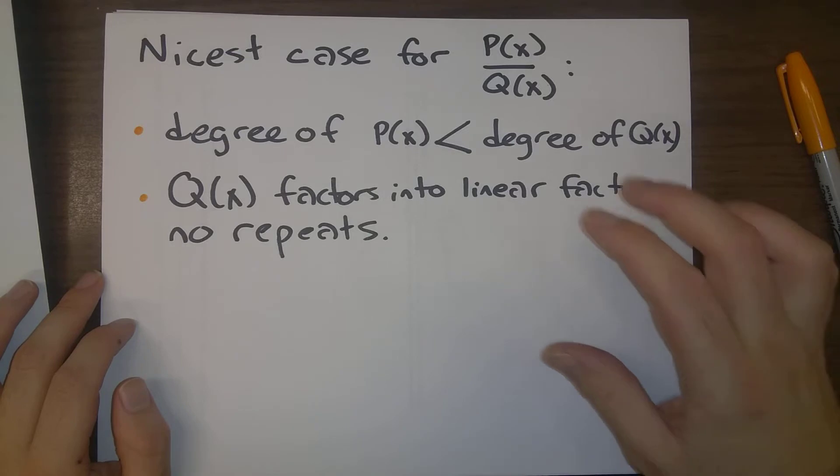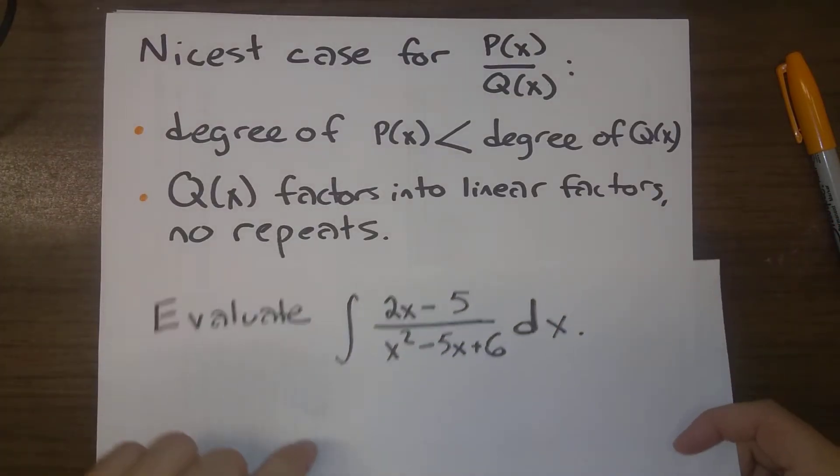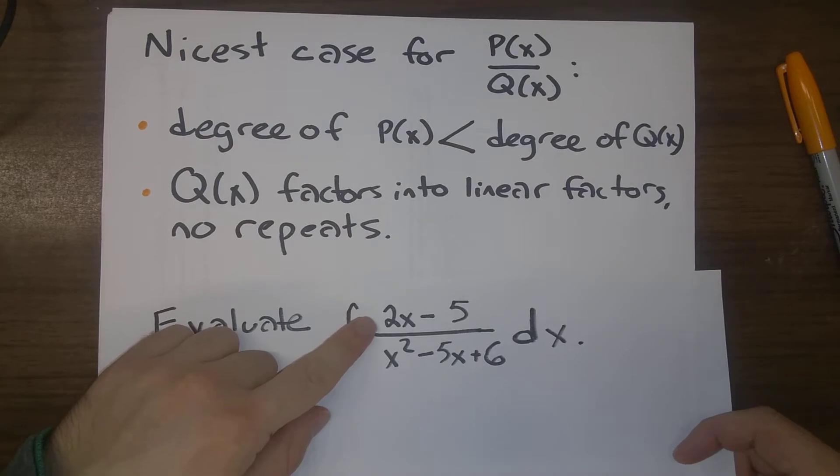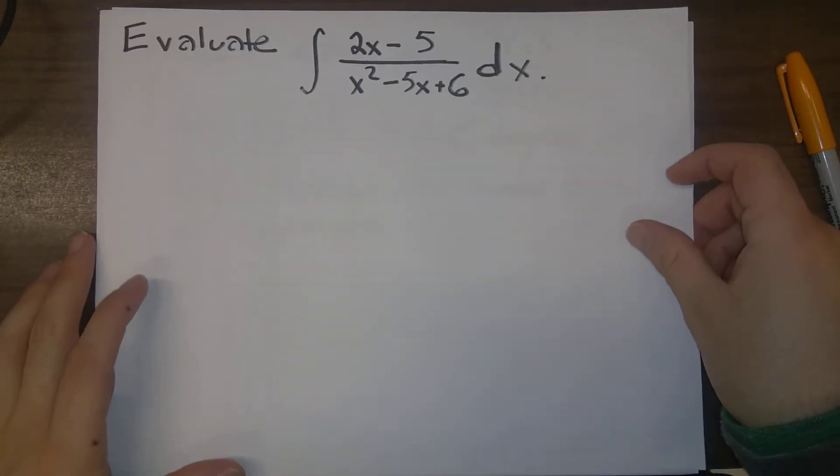But for the time being, we're going to stick with this nice simple case. We can see here the degree of 2x minus 5 is 1. The degree of x squared minus 5x plus 6 is 2. So the first point is satisfied.